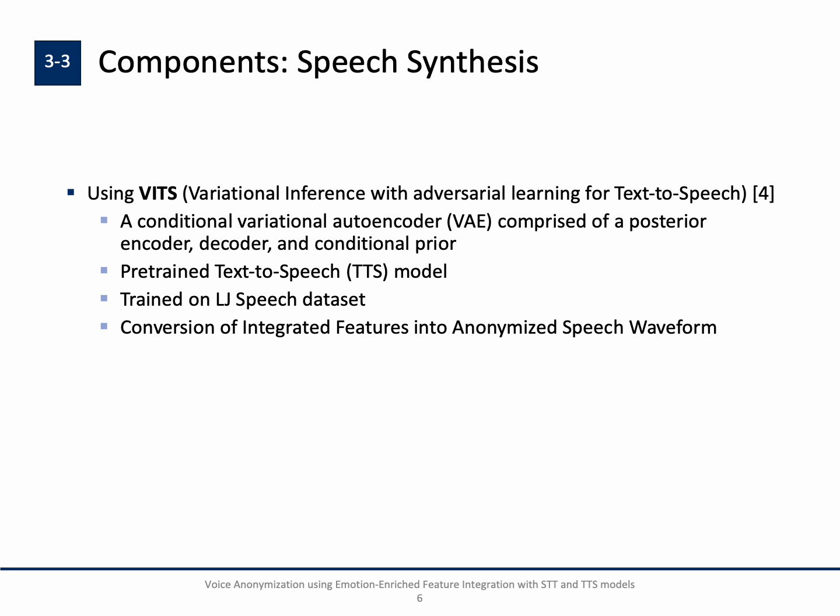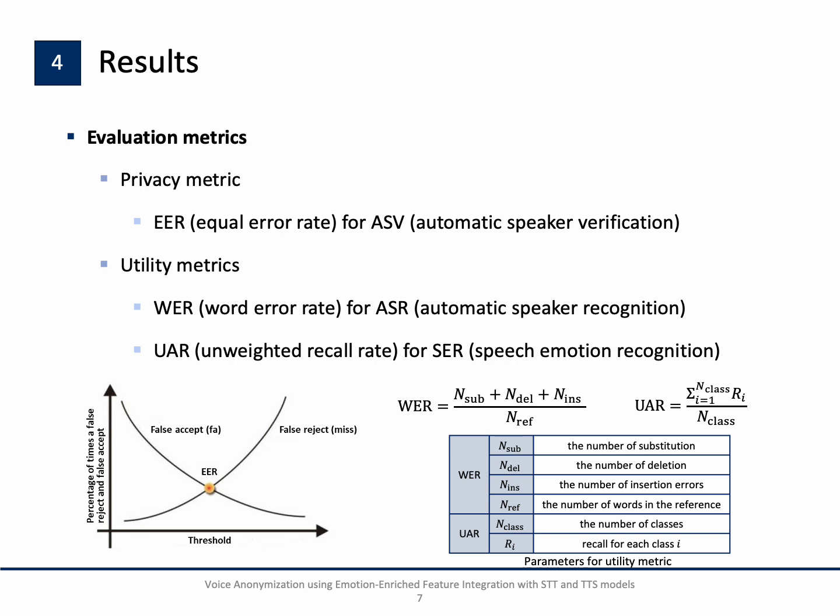The LJSpeech dataset consists of about 13,000 short audio clips of a single speaker. Consequently, the synthesized audio may reflect the voice characteristics of this single target speaker. Our experimental framework follows the Voice Privacy Challenge 2024 guidelines. There are three evaluation metrics considered: privacy of the anonymized dataset is assessed using an ASV system under a strong attacker scenario, and utility is evaluated using word error rate for ASR and unweighted average recall for SER.